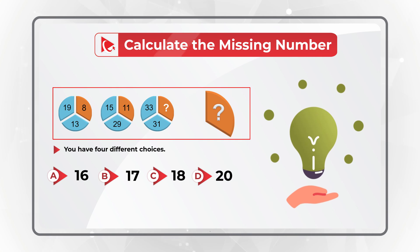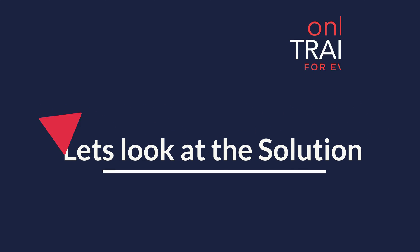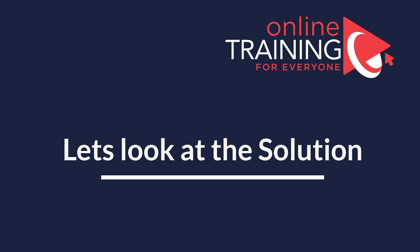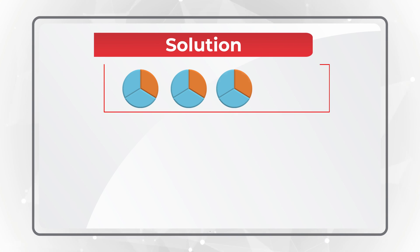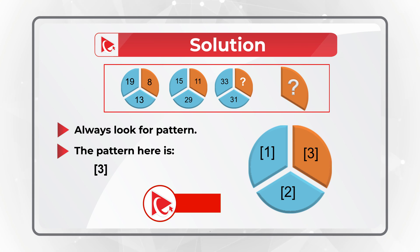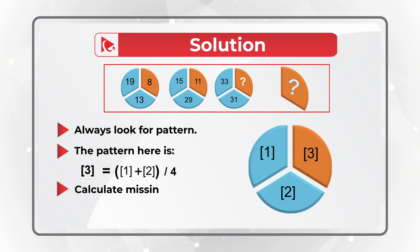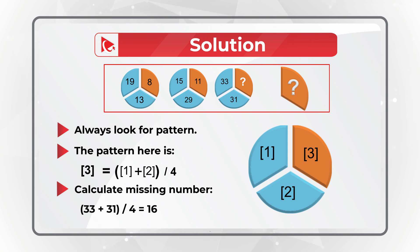The solution to this problem is really interesting. You need to always look for patterns to solve these types of problems. The pattern here is that section 3 of the circle is calculated as sections 1 plus 2, divided by 4. So to calculate the missing number, you need to add 33 plus 31, then divide the sum by 4, and you will get the result: 16.